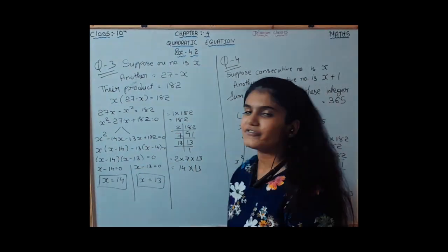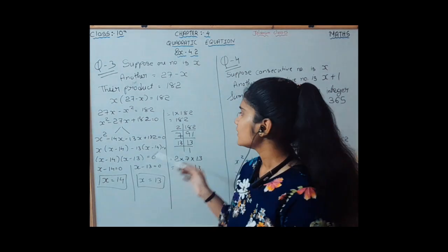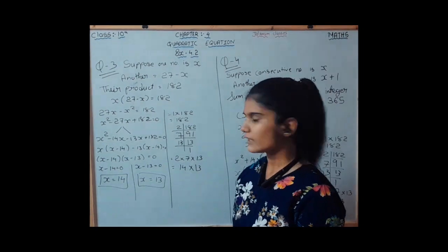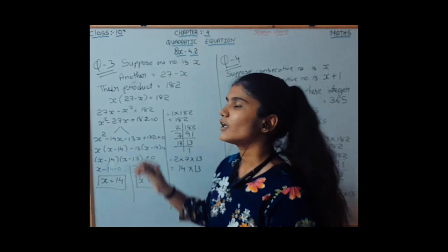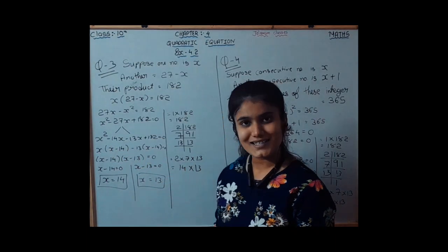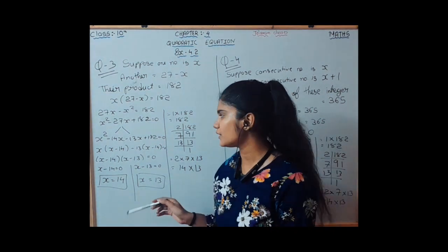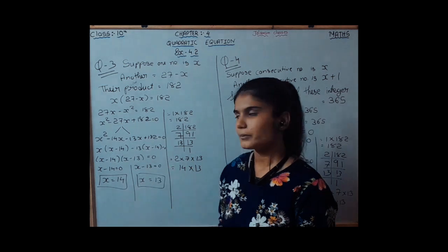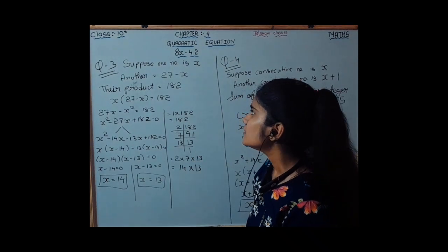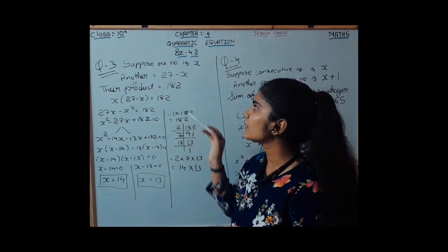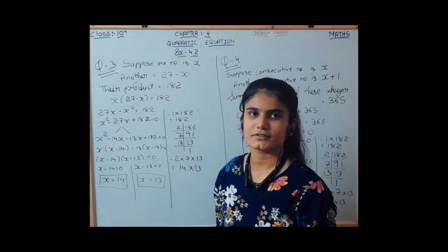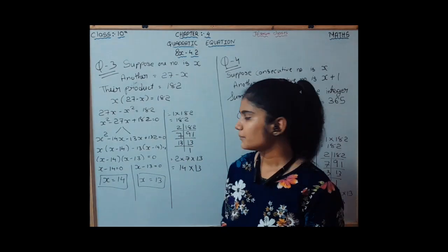Using the factorization method, the multiples of 182 are 2, 7, and 13, which gives 14 and 13. The four-term equation is x squared minus 14x minus 13x plus 182 equals 0. By pairing and taking common factors, we get the roots of x as 14 and 13. So if one number is 14 the other is 13.